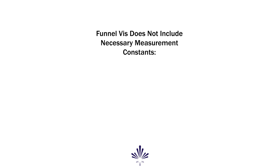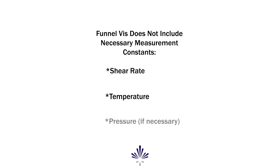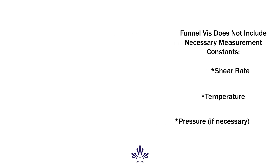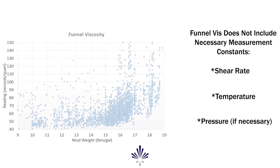To be meaningful, viscosity measurements should specify shear rate, temperature, and pressure if other than atmospheric. This graph shows various data points of funnel viscosity across a wide range of mud weights and further underlines the shortcomings of the measurement.